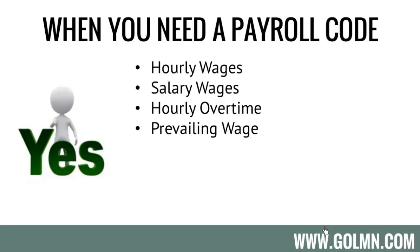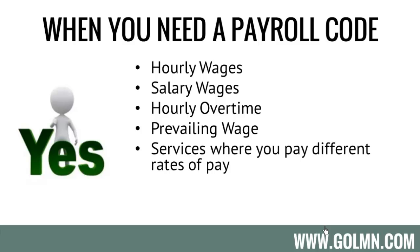You would need a payroll code if you do prevailing wage work — if you pay your employees a premium when they work on a government or commercial project, you can set up a prevailing wage payroll code with a specific rate for when employees do that work. It's a new payroll code because it is a different wage. You could also set up a payroll item when you have services that pay different rates. For example, with snow versus maintenance: pay someone $15 an hour for maintenance and $20 an hour for snow and ice work. You'd create two payroll items — hourly maintenance at $15 and hourly snow at $20 — and set up timesheets to use the different rates based on the job, and it'll pay the employee correctly.